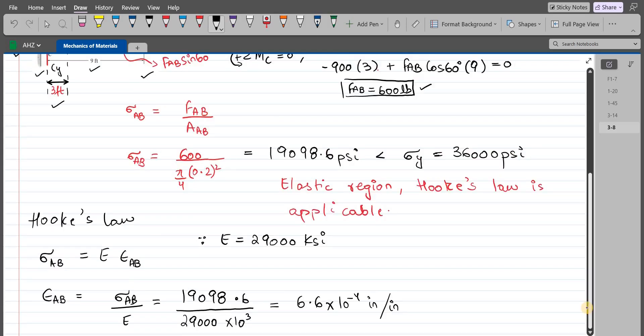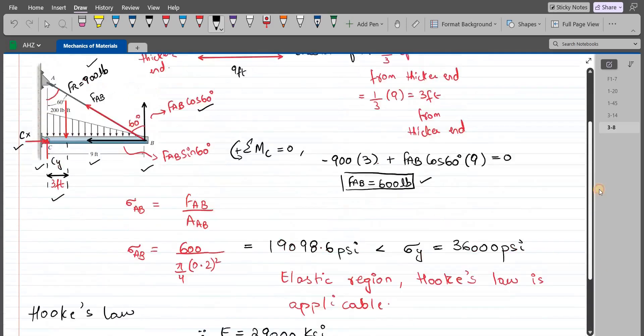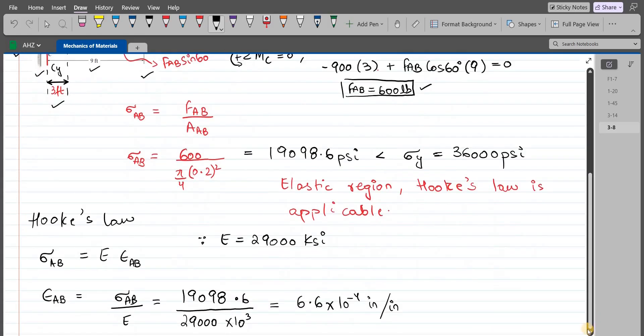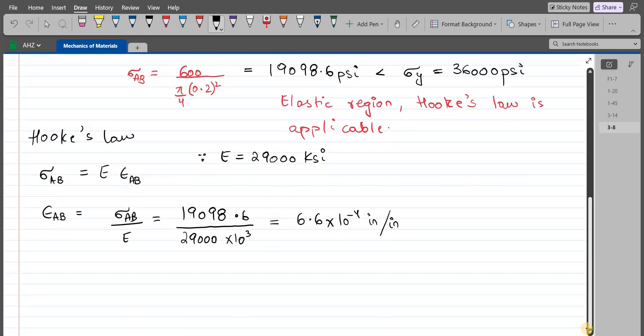Our main target is to find the deflection, how much the wire AB stretches. For deflection, we can relate the strain with the deflection. Average normal strain epsilon AB equals the change in length delta AB divided by the original length, the unstretched length of the wire AB. Let's call this equation 1.